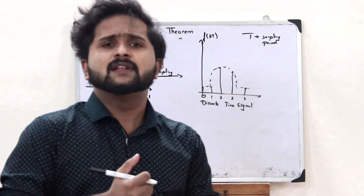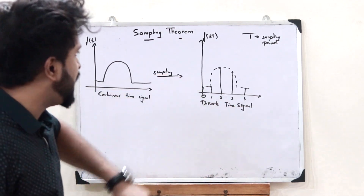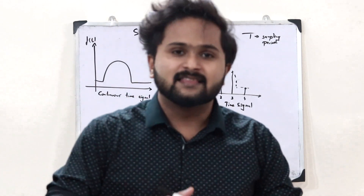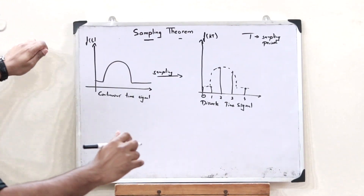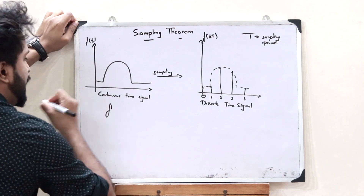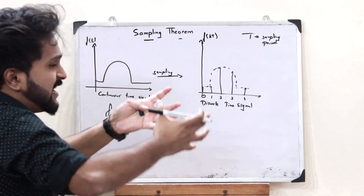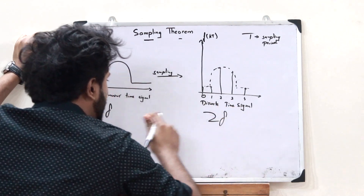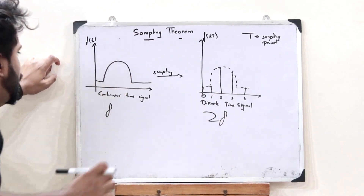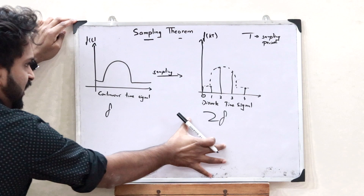Now we discuss what we refer to as sampling theorem. We understood that for the purpose of converting a continuous time signal onto a discrete time signal, we use sampling, and the samples are obtained at T sample periods. What sampling theorem states is that if the maximum frequency of this particular continuous time signal is f, then these particular samples must be taken at at least twice of this particular frequency f. Only if it is taken at at least twice of this frequency f, then only can we reconstruct this particular continuous time signal from this discrete time signal.